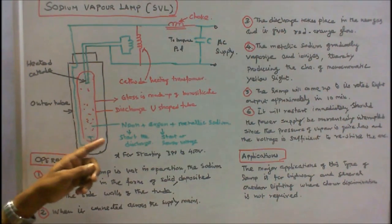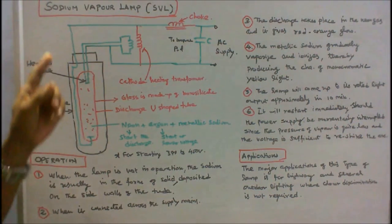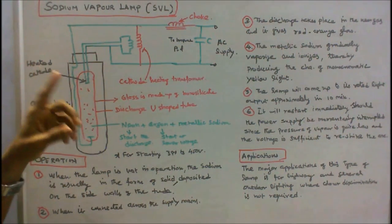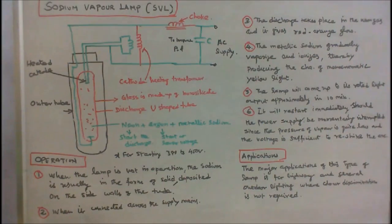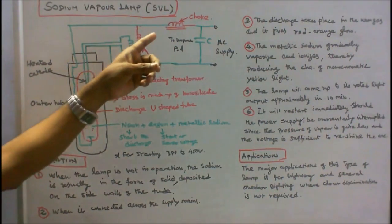Here neon is used to start the discharge. Sodium vapor lamps are suitable only for AC supply. Hence we need a choke control. A choke is connected here.